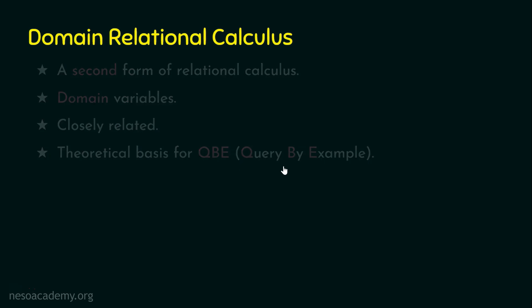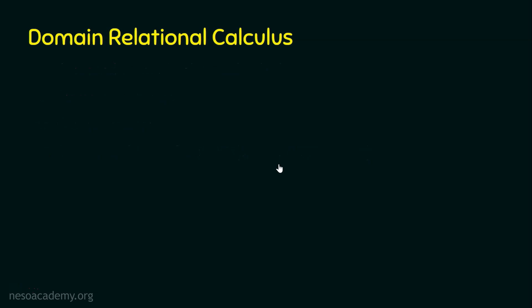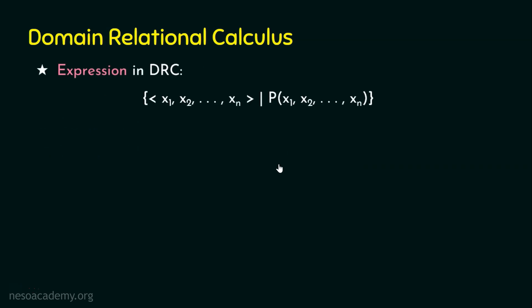Now let's see the formal definition of domain relational calculus and how an expression is defined. It is the set of all domain variables x1, x2, up to xn such that the predicate of x1, x2, up to xn is true. In tuple relational calculus, we used the set of all tuples t such that the predicate on tuple t is true. But here we focus on attribute by attribute. If we have 10 attributes in a relation and want all in the result, we define 10 domain variables x1, x2, x3, up to xn, and the condition for all must be true.